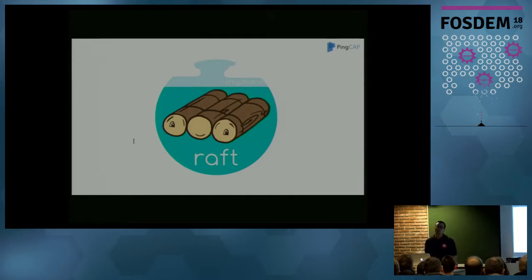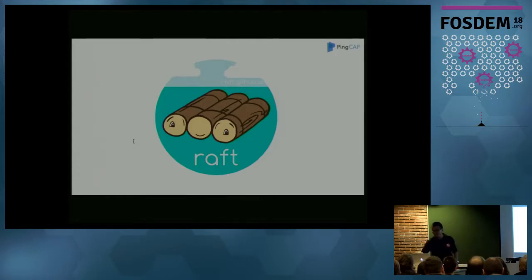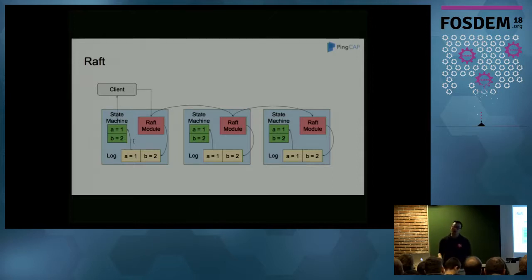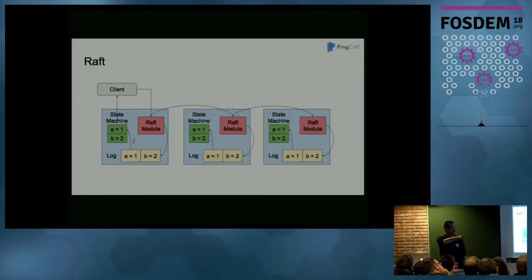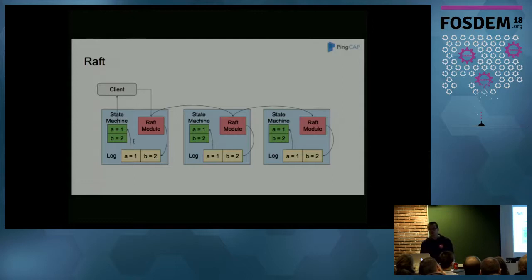So here we need to find a way to replicate our data across multiple machines to guarantee data safety, and we must guarantee data consistency. Here we use Raft. Raft is a distributed consensus algorithm based on a replicated log. When the client wants to write something, we use Raft to append the command to the Raft log, then replicate it to multiple machines. After the majority of nodes accept the log, it is committed and applied, and the result is returned to the client. Using Raft helps us keep data consistency and do replication automatically.